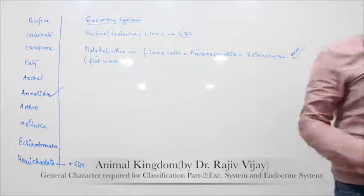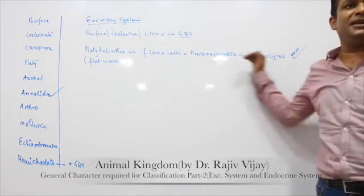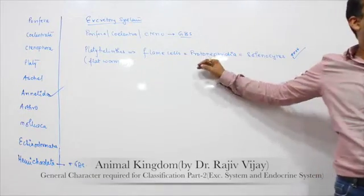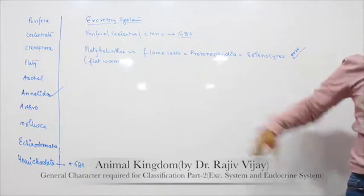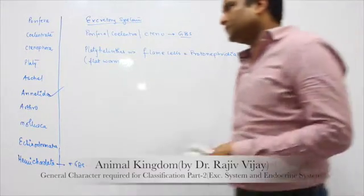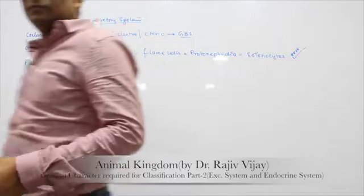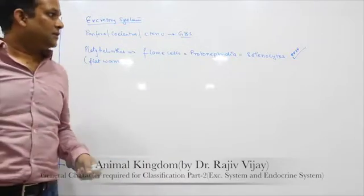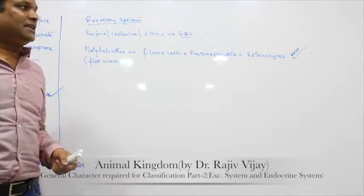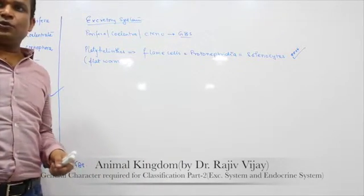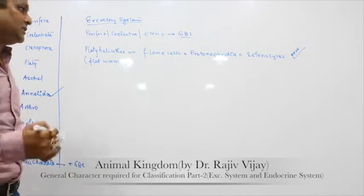The other names of flame cells are solenocyte and protonephridia. This is a very commonly asked exam question regarding Platyhelminthes excretion — flame cells, also called protonephridia or solenocyte.